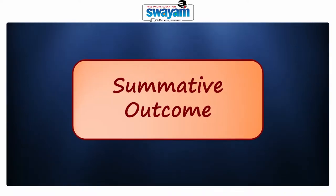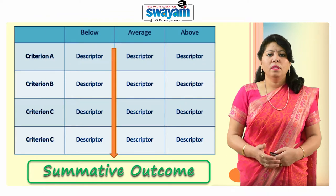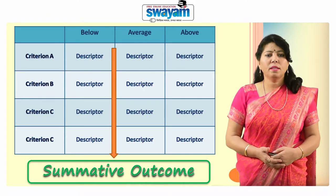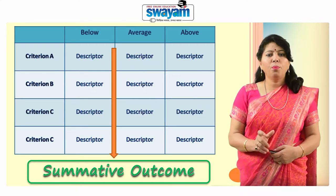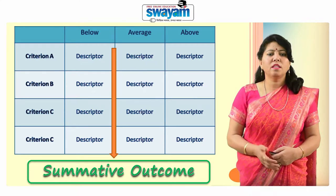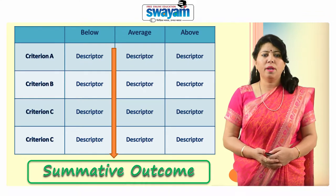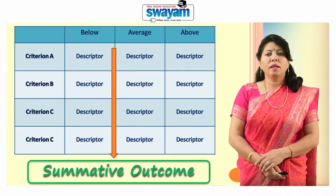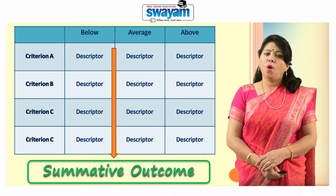The last component of a rubric is summative outcome. Summative outcomes are written at the bottom of the rubric and represent the overall judgment and assessment of the student's work. This assessment counts towards the student's final grade in the subject or assignment.